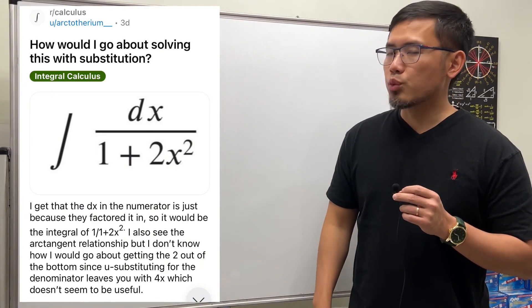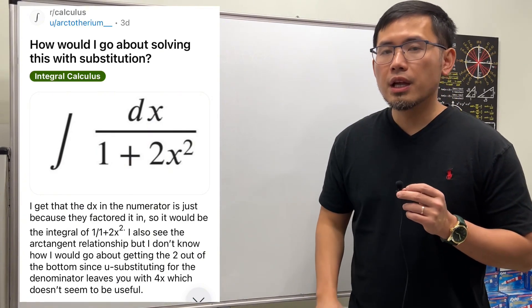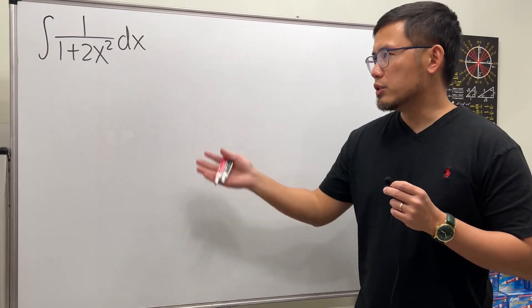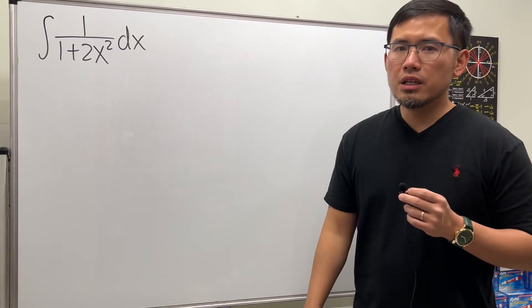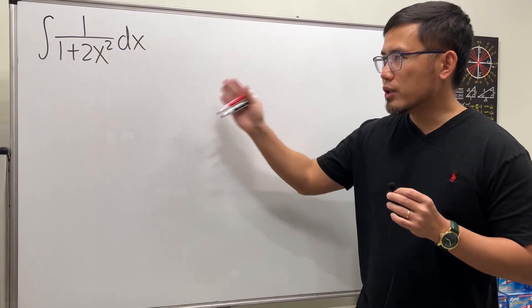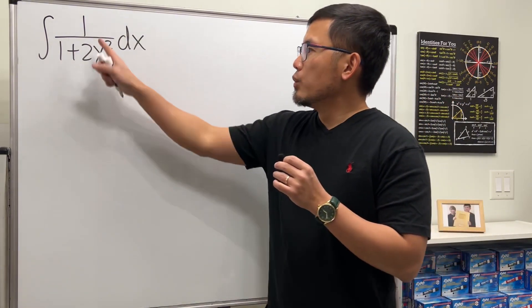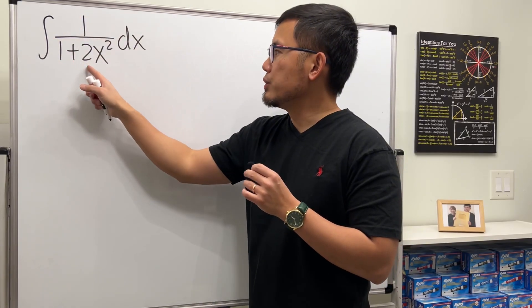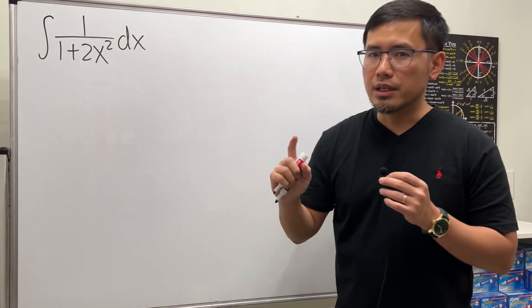How would I go about solving this integral with u-substitution, not trig substitution? This is most likely in a Calc 1 class because trig sub will be for Calc 2. We have the integral 1 over 1 plus 2x squared dx. The key right here is that